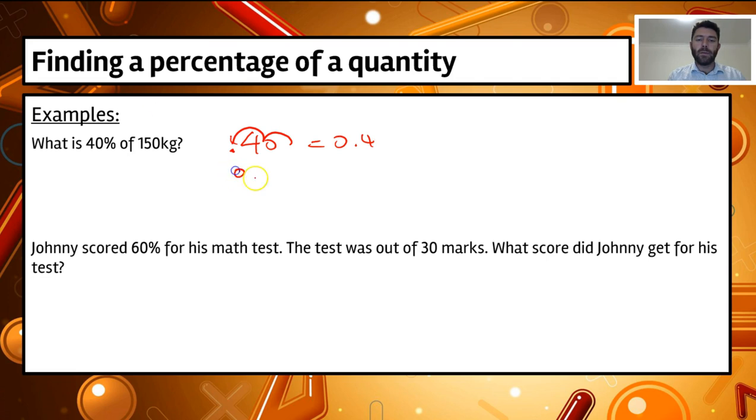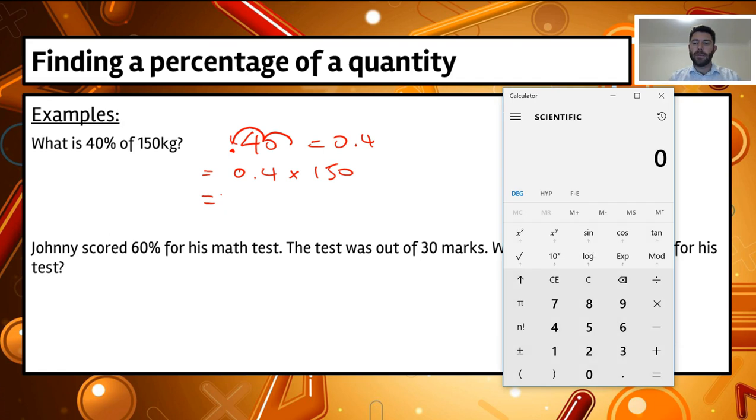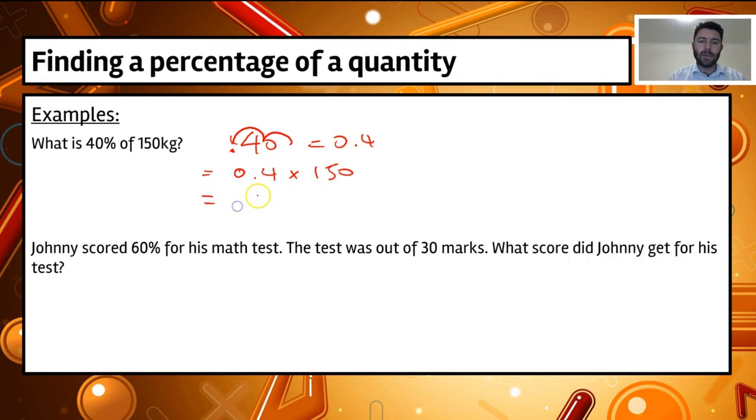So now what we do is we go 0.4, and we multiply that by 150, and that equals 60. So that's 60 kilos. 40% of 150 kilos is 60 kilos.